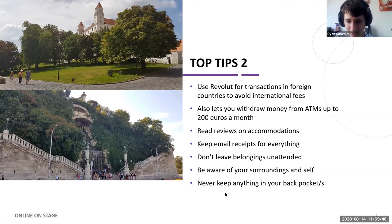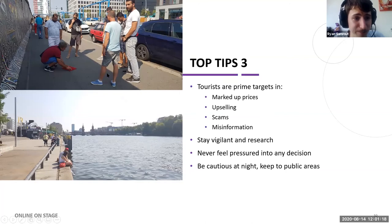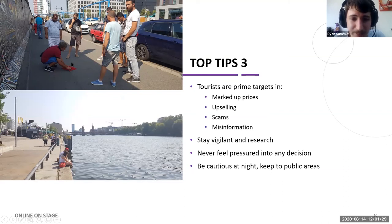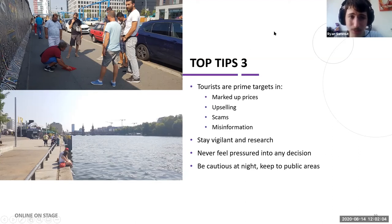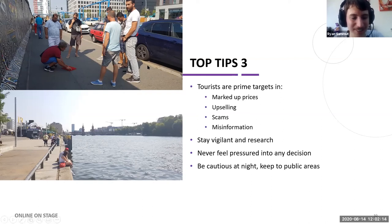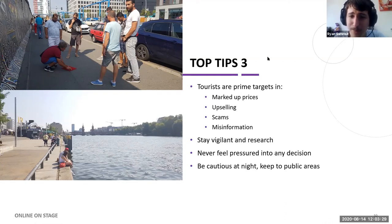Now getting into safety — this photo shows a tourist scam happening right in front of me in Berlin. You can see on the left the Berlin Wall. What he's doing there is a scam known as three card monte. It is illegal and they never stay in one place for too long. I had to get a photo because I'd read about it a lot on the internet and it was interesting to see in person. It's really not worth getting into — don't participate in it, but if you do see it, feel free to take a photo because it is interesting to watch. Tourists are prime targets for marked up prices, upselling, scams, and misinformation.